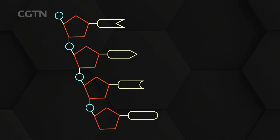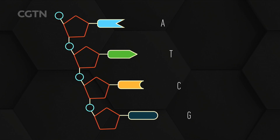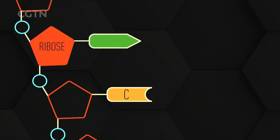In DNA the base can be one of four different types: adenine, thymine, cytosine and guanine, which codes the genetic information a bit like a four-letter alphabet. In RNA, thymine is replaced by uracil.